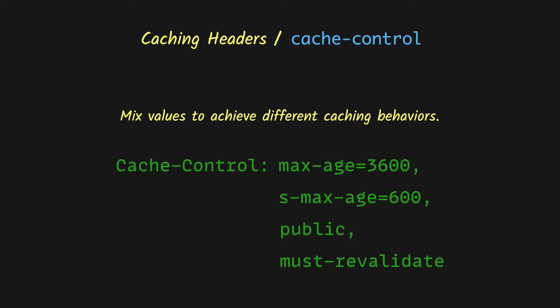You can mix Cache-Control values however you want to achieve the caching behavior required for your application. For example, a value of public, max-age=3600, s-maxage=600, must-revalidate means the cache is public so it can be stored at the proxy level as well as on the client; max-age of 3600 seconds sets client-level caching to one hour; s-maxage of 600 seconds sets proxy-level caching to 600 seconds; and must-revalidate ensures the client will never serve stale content and must fetch fresh content from the server whenever it has expired.